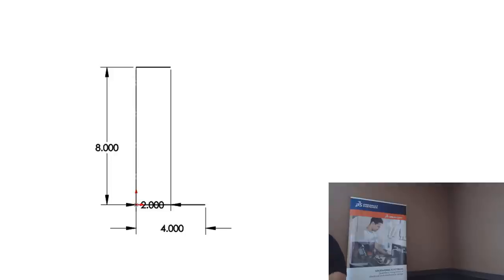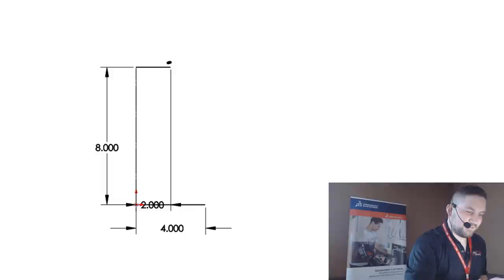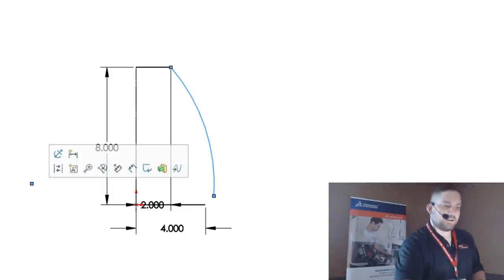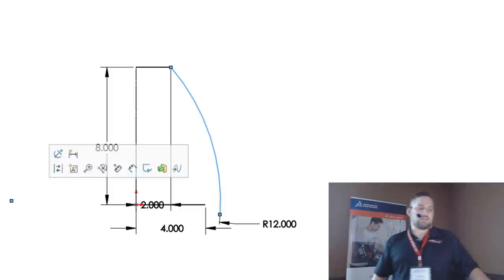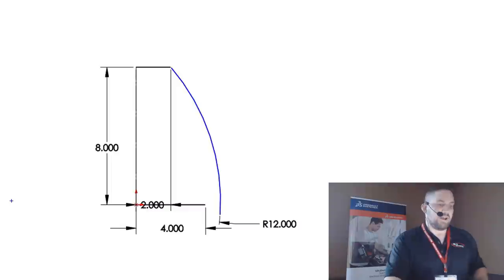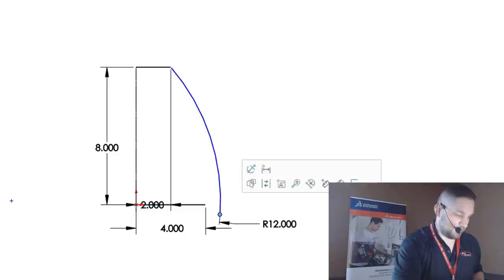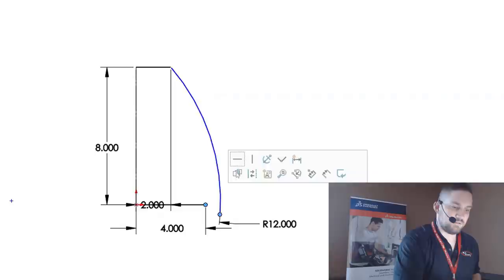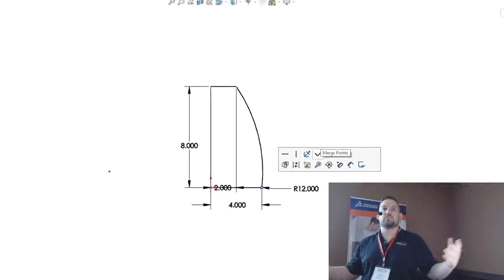An arc is way more complicated. Got an arc — set it to 12. I want to make sure I get the point coincident, so I'll hold and get that point and make them merge. Fully defined sketch using my fingers.